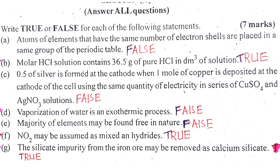True-false number A: Atoms of elements that have the same number of electron shells are placed in the same group of the periodic table. Groups of elements that have the same number of electron shells are placed in the same group of the periodic table.